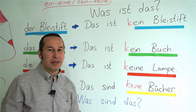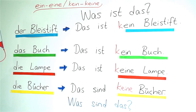Now repeat after me please: Was ist das? — Das ist kein Bleistift. Was ist das? — Das ist kein Buch. Was ist das? — Das ist keine Lampe. Was sind das? — Das sind keine Bücher.